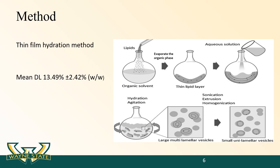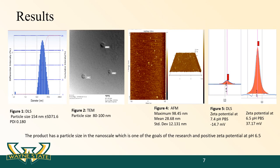The mean drug loading was equal to 13.49% weight-to-weight ratio. Dynamic light scattering data for CD40A nanoparticles show a homogenous size distribution with an average diameter of 154 nm and polydispersity index equal to 0.180, indicating a narrow size range. Transmission electron microscopy images indicate spherical particles with a size range from 80 to 100 nm, making this nano-carrier suitable for tumor targeting via enhanced permeability and retention effects. Atomic force microscopy shows particle size less than 200 nm.